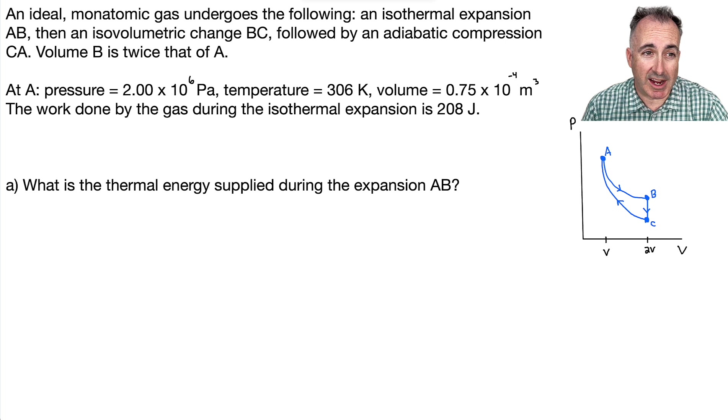So we're told that we have an ideal monatomic gas and it undergoes the following. First, an isothermal expansion AB. So that means from A to B here, it's isothermal. That means the temperature doesn't change from A to B. And then what happens? Then it has an isovolumetric change B to C. That means the volume stays constant now. And after that, it goes back from C to A, but at this time it's adiabatic.